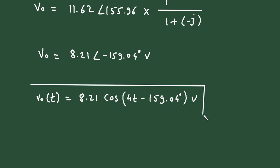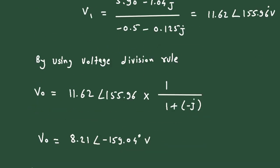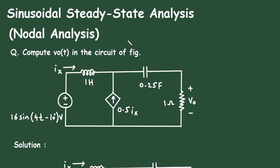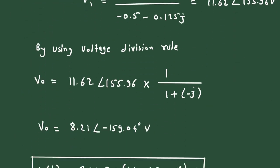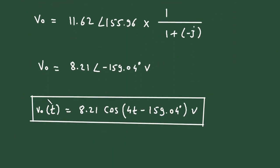In this problem, we had to find Vo(t) using nodal analysis. The final answer is Vo(t) = 8.21 cos(4t − 159.04°) volts. Don't forget to check out the other videos on this channel, and thanks for watching.